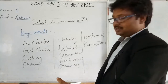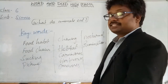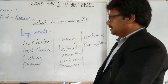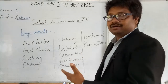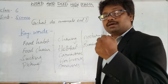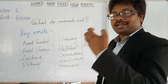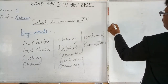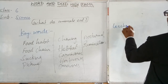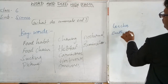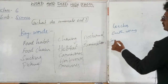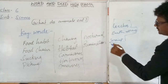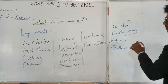Sucking — some living things like leeches, earthworms, and snails suck their food. Suckers are the body parts which help in collecting or taking food. The food of a leech is blood. Other living things that also have suckers for collecting food include earthworms, snails, and butterfly.